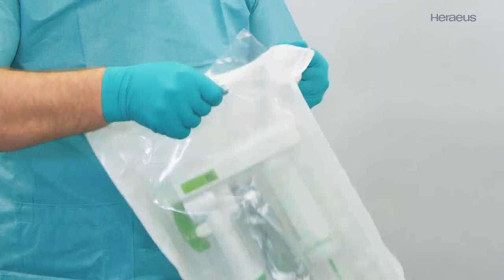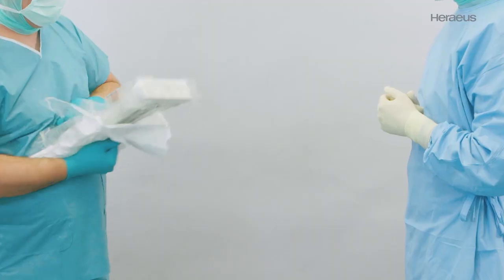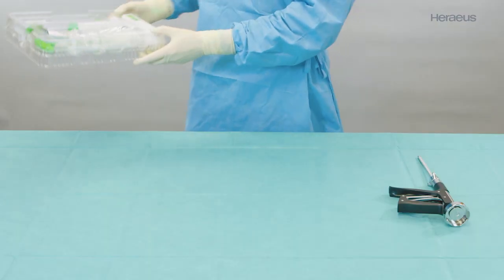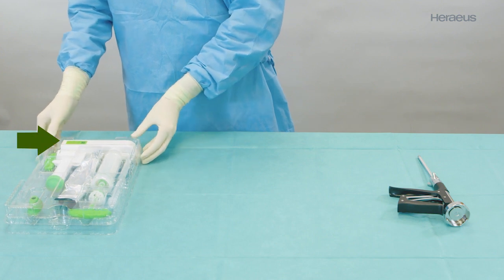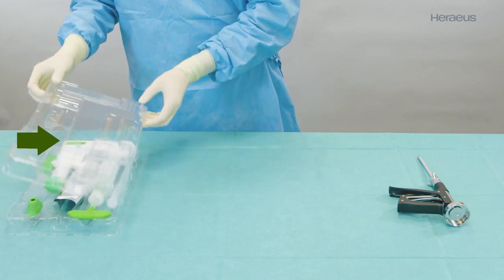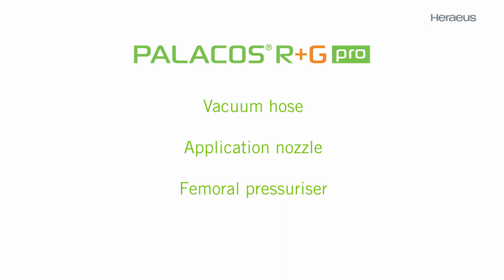Open the inner bag to remove the sterile blister and place the product on a sterile table with the green label facing up. The blister of the Palicos Pro all-in-one fixation system contains a vacuum hose, an application nozzle, and a femoral pressurizer.